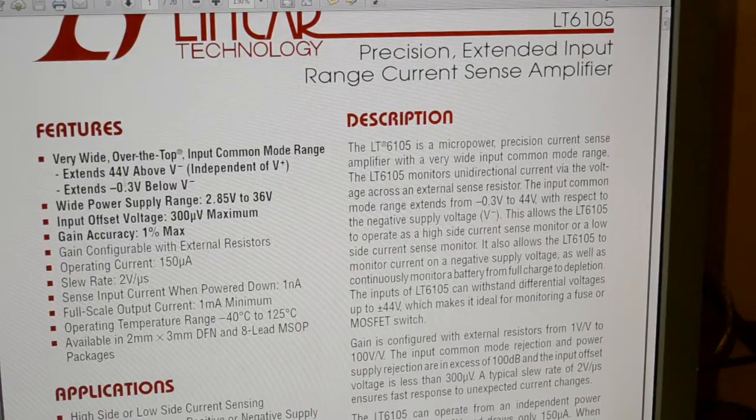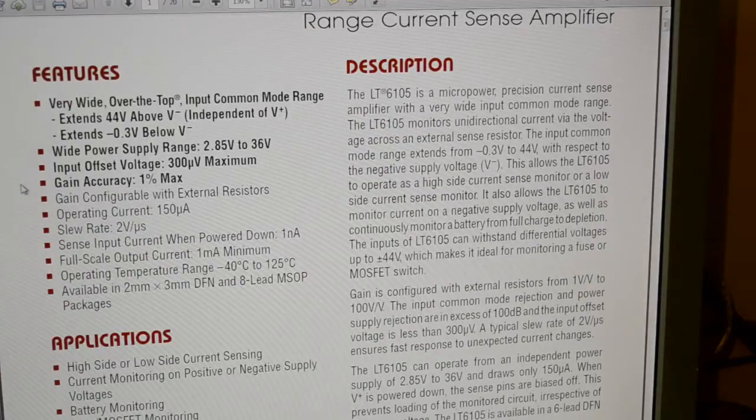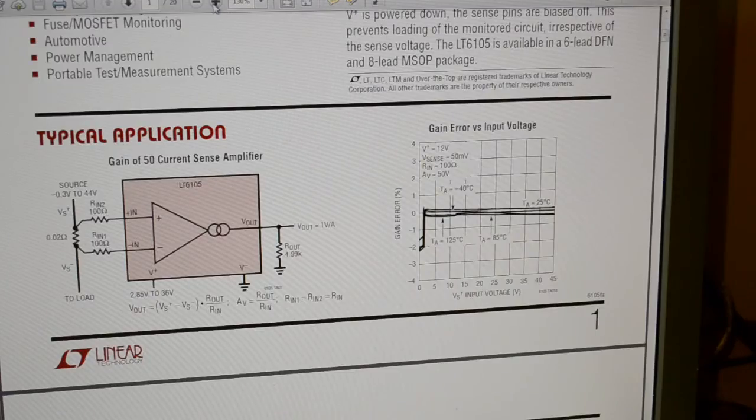You'll see it's the model, this is a model LT6105. Download the data sheet if you want before you purchase it. But you can see the operating voltages. Let me expand this.